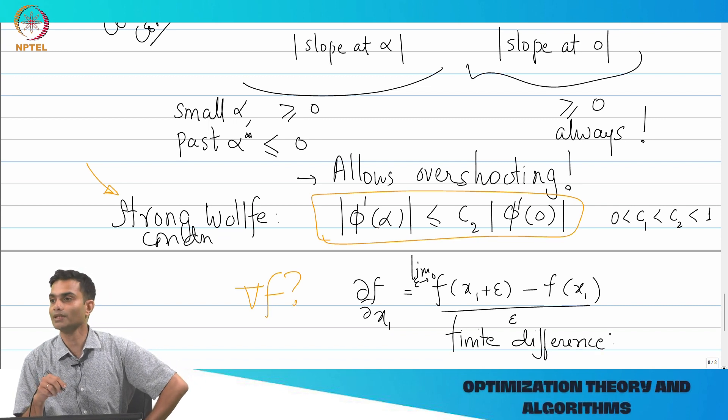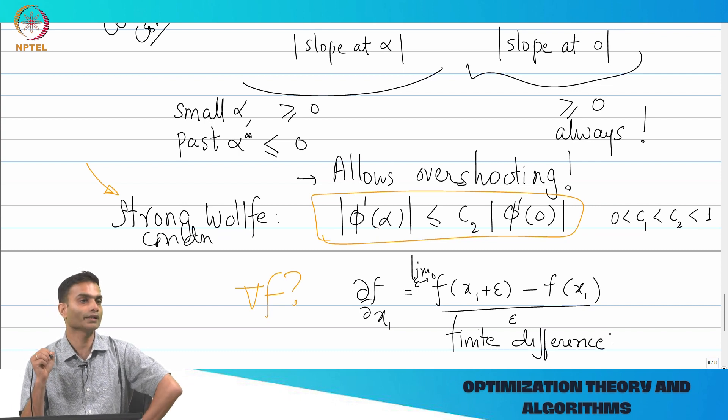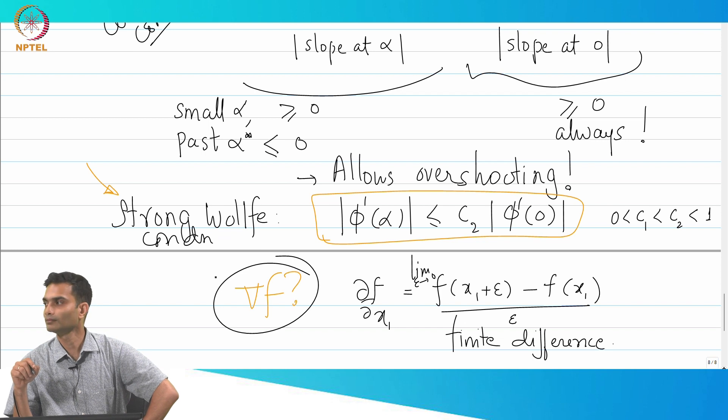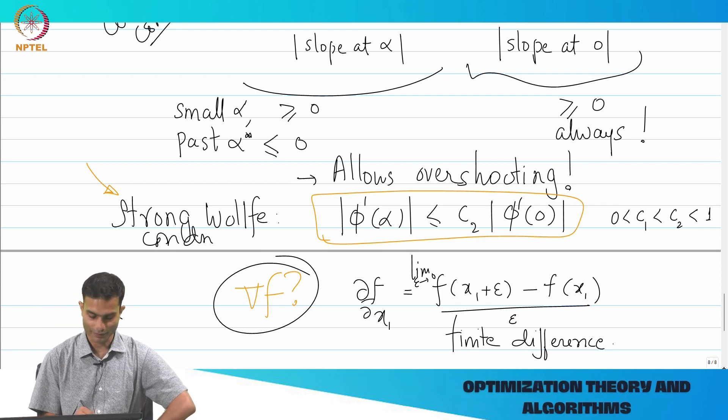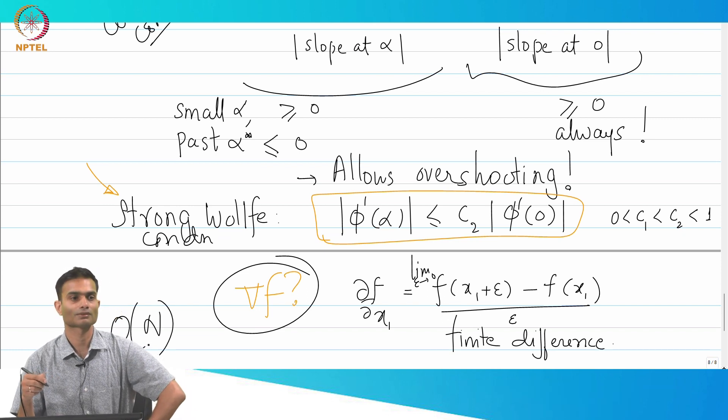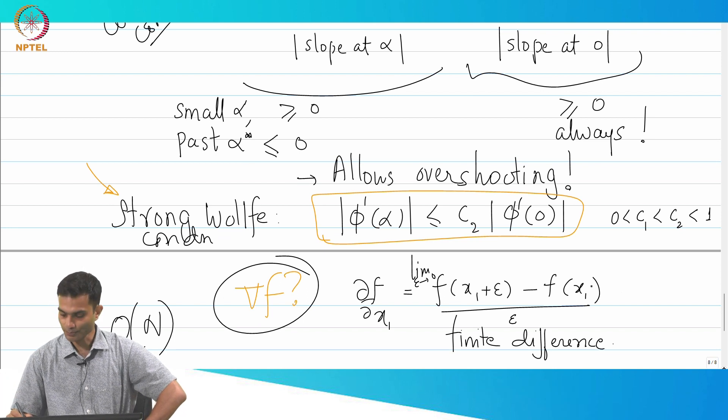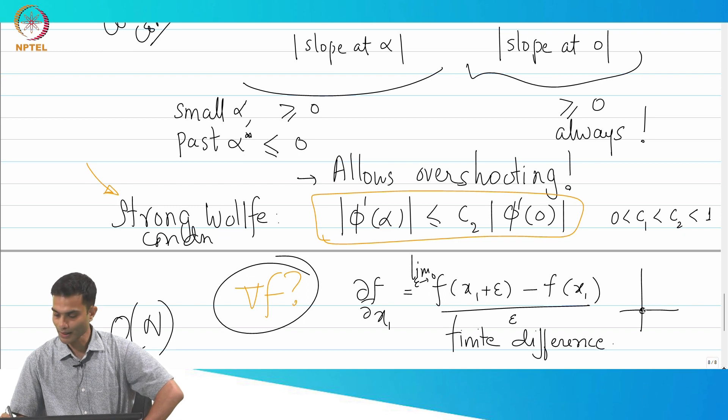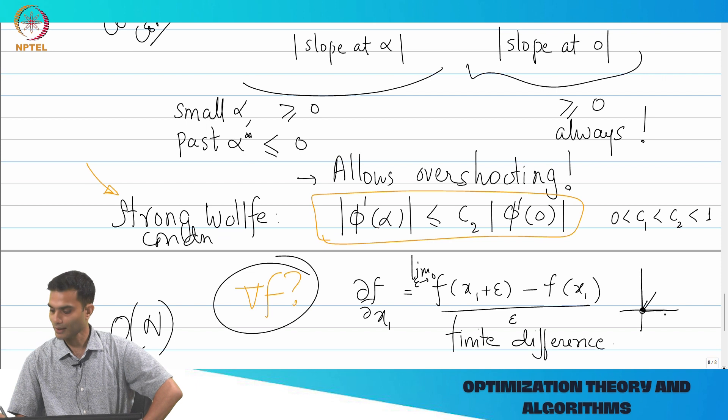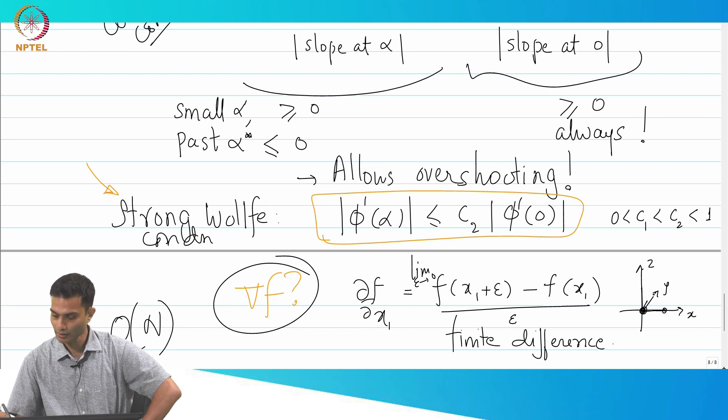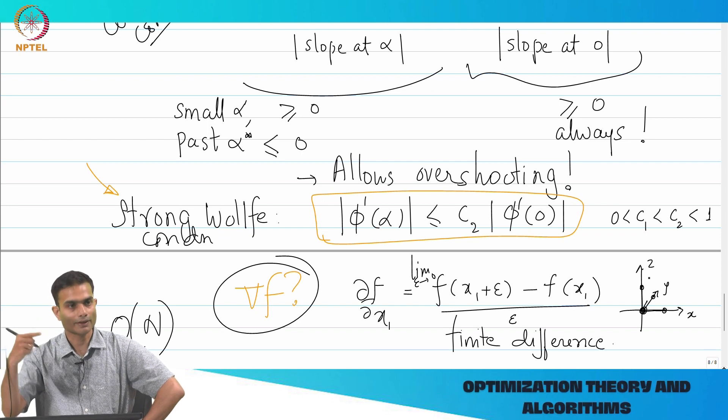So if I have a function that is living in n dimensional space, how many function evaluations will I need to do in order to get this guy? Is it n? I mean it is definitely order n, but we can be a little bit more precise. It is n dimensions, I need to calculate n partial derivatives, how many function values do I need to calculate? n plus 1, because the point over here is fixed, I need to make ε steps in each dimension.